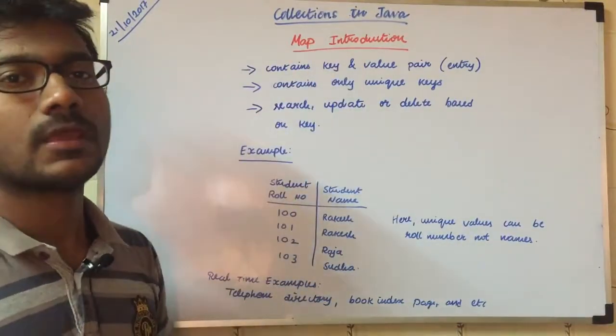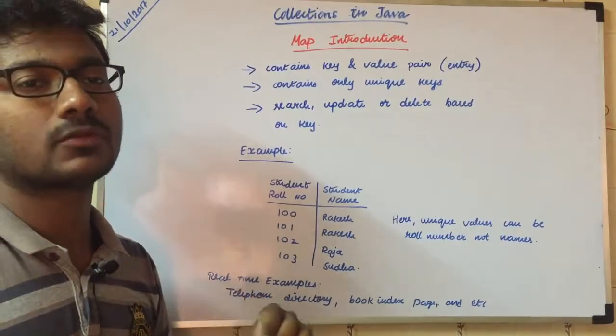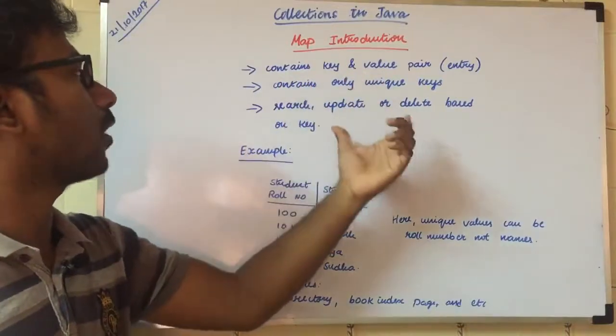Map is an interface. An interface has abstract methods which need to be correctly implemented in the implementing class. So Map is just an interface.